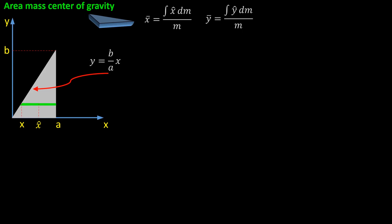In order to find the center of gravity we have to use these formulas. Let's take a mass piece — the green element. We first find the center of gravity of this mass element, which is the midpoint since it's a rectangle. We take the x coordinate of that — x_hat — multiplied by the mass of this element, dm. We sweep it over the whole object via integration, and at the end we divide by the total mass. That gives us the x coordinate of the center of gravity.